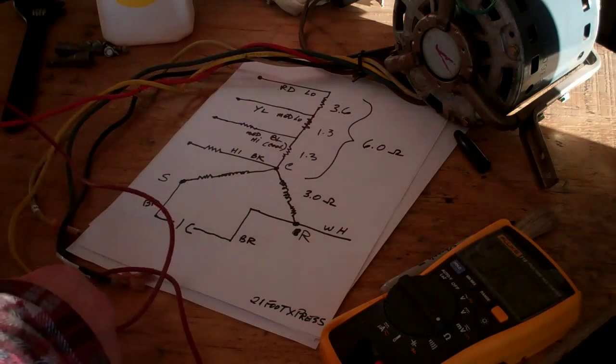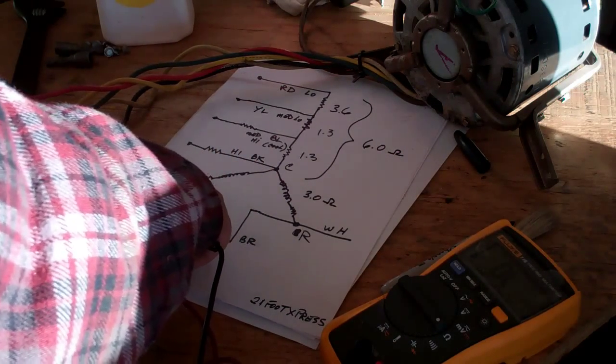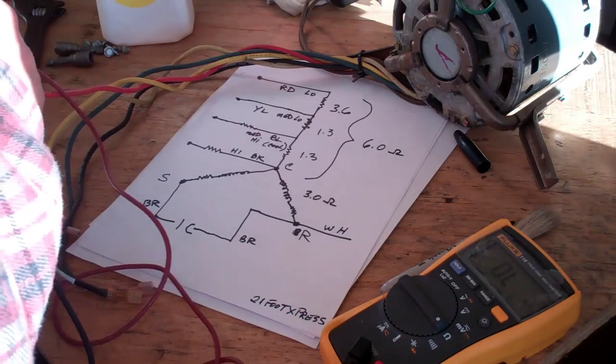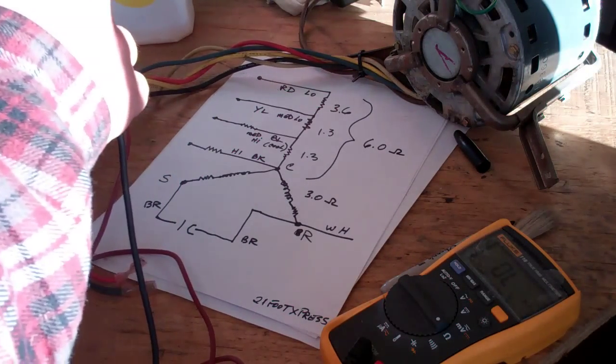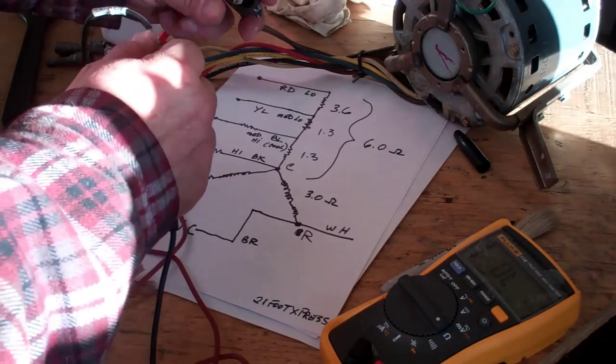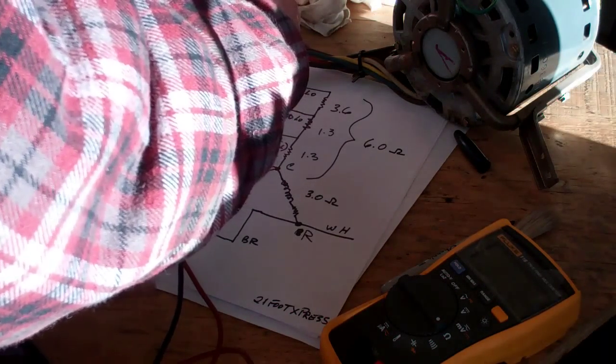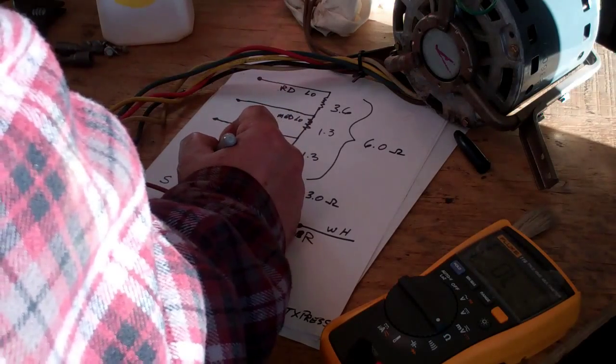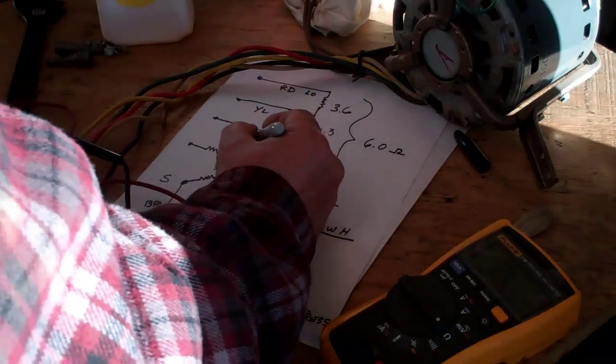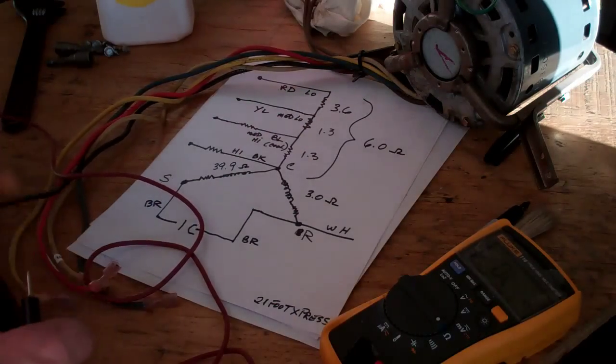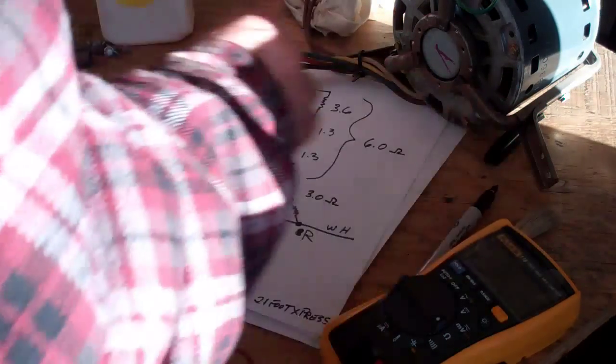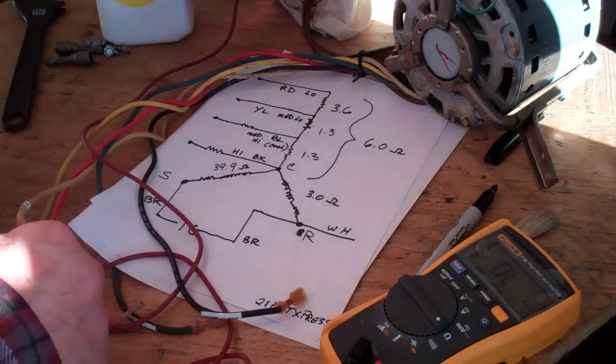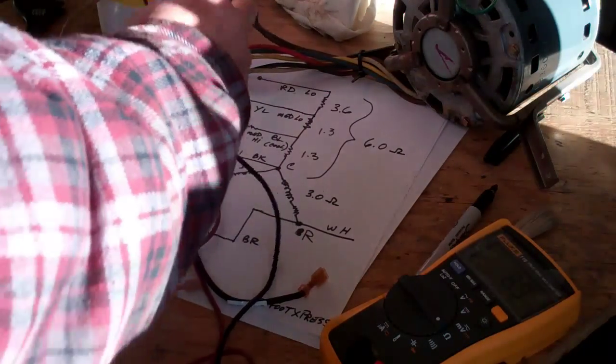And then I want to go check this winding now and check from black to the start terminal which is one of the brown leads. There's two brown leads. There's 39.9 ohms. And then if I go from white to the other brown